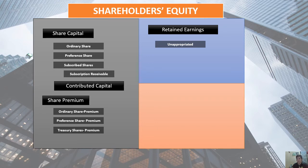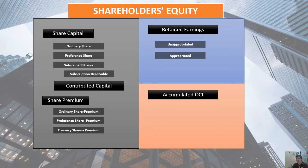Under retained earnings we have two major portions. First, unappropriated retained earnings — these are earnings available for distribution to shareholders as long as the board of directors declares a dividend. Second, appropriated retained earnings — these are retained earnings set aside for other purposes, such as for the purchase of treasury shares or for future expansion. The last part of shareholders' equity is accumulated other comprehensive income, which consists of gains or losses of the corporation that are not yet closed to retained earnings and are therefore presented separately on the shareholders' equity.